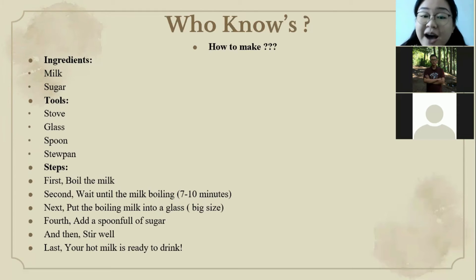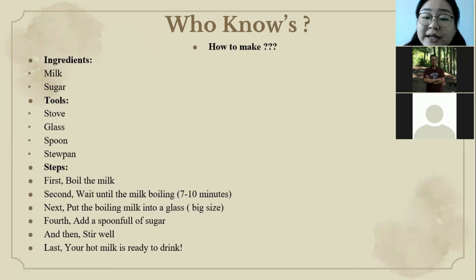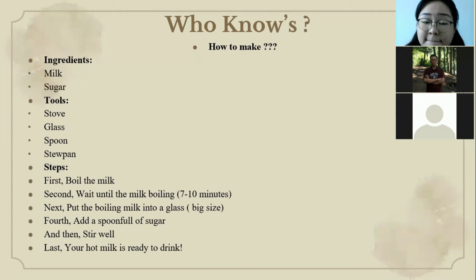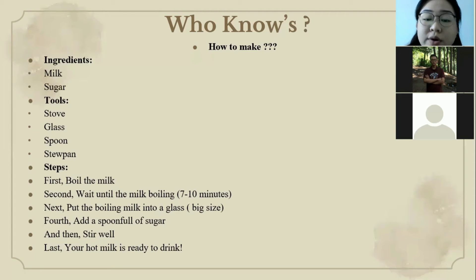Okay, the time is up. Are you done? Now, can I ask a question? After you read the procedure text, what is the most suitable procedure presented in the text? A student answers: I think it is about making hot milk, because we can see from the ingredients and also the steps of the text that say 'boil the milk.' The teacher confirms: we can conclude that this text is about making hot milk — another clue is 'wait until the milk is boiling.'